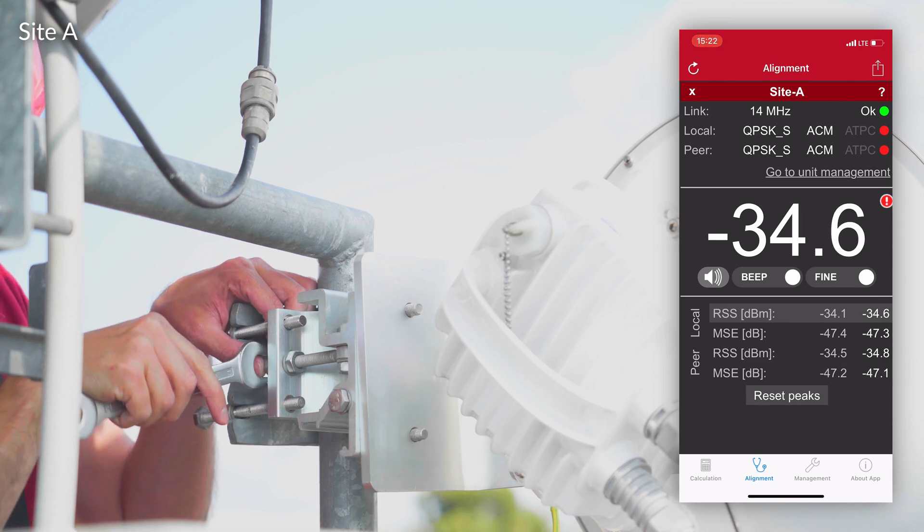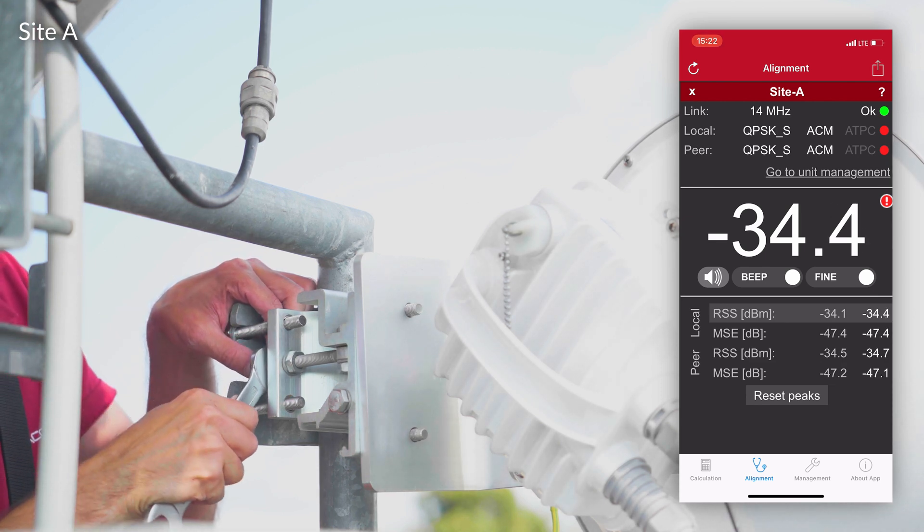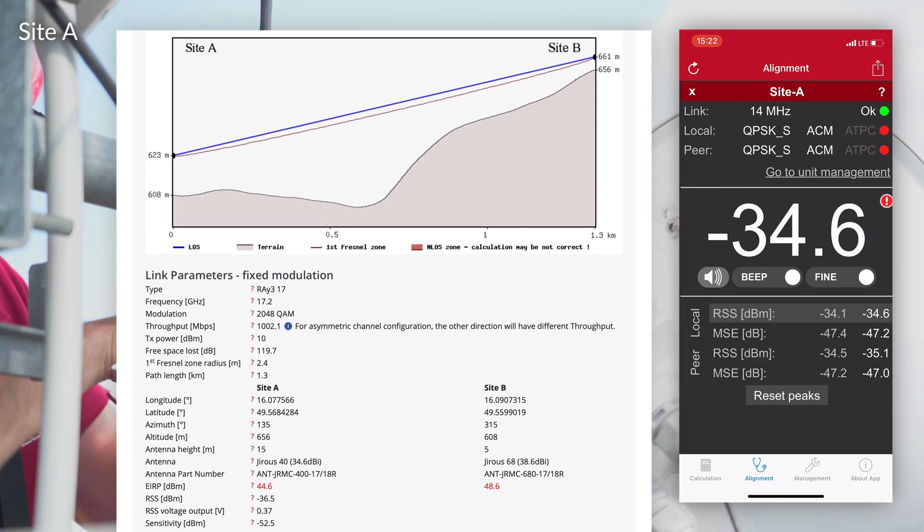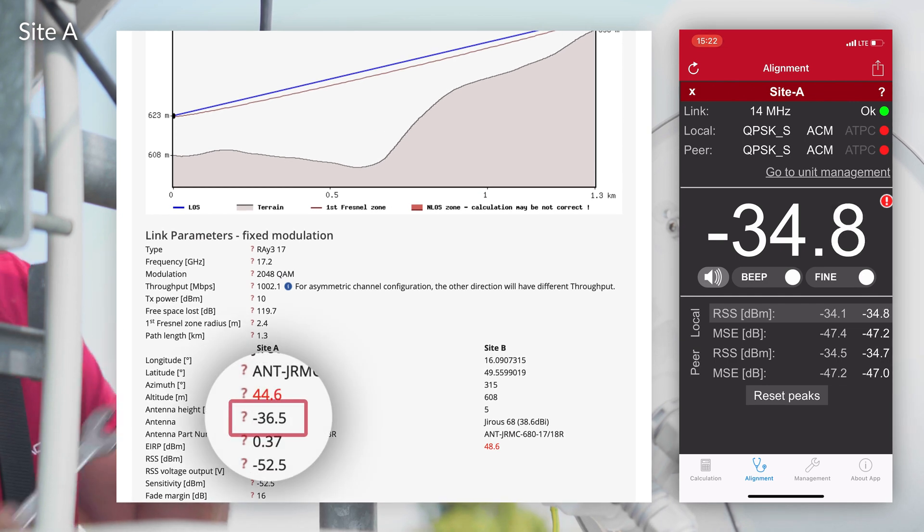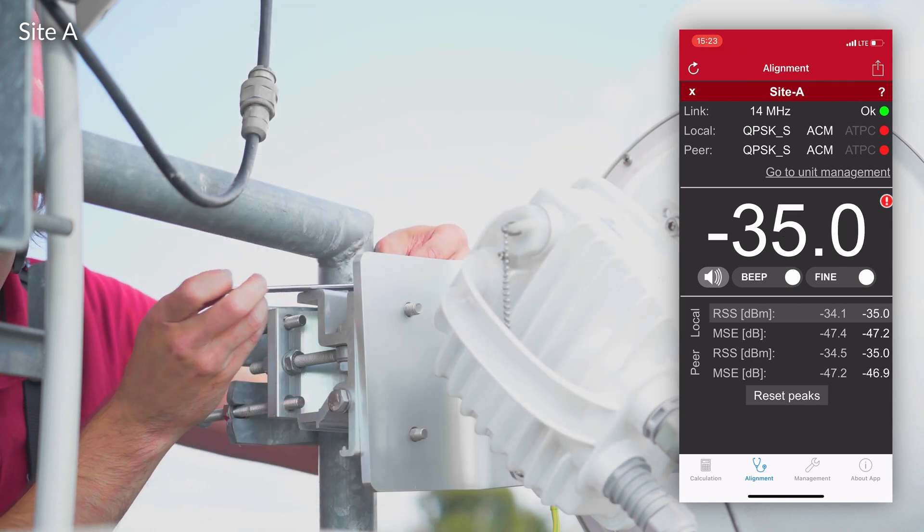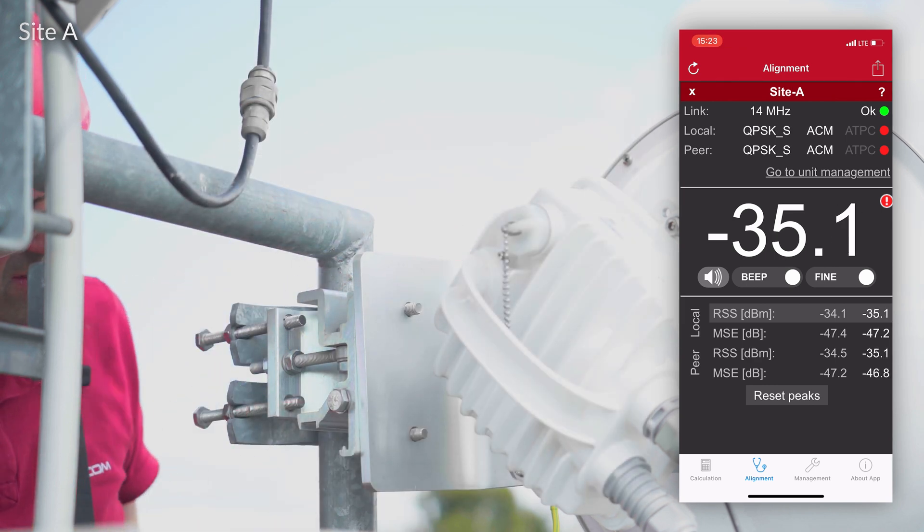We continue with alignment on both sides until RSS is within 2 dBm of the pre-calculated value. If you can't achieve target RSS, there will be something wrong with the installation. Review our user manual for troubleshooting tips.